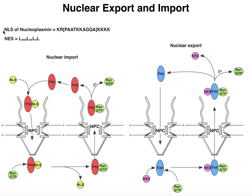If a protein needs to be imported into the nucleus, it's going to have what we call a nuclear localization sequence, also called NLS. This is a sequence of amino acids that targets a protein into the nucleus. Here's an example nuclear localization sequence for the protein nucleoplasmin, a protein that needs to get into the nucleus much like DNA polymerase or transcription factors. You'll notice that this sequence is heavily saturated with the amino acid K, which is lysine — about half of these amino acids are lysines.